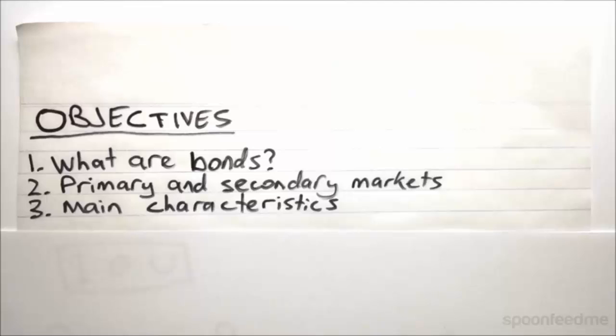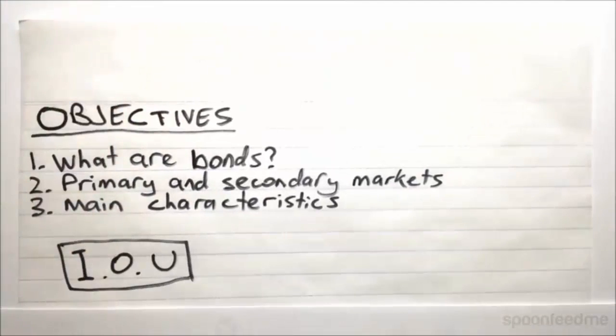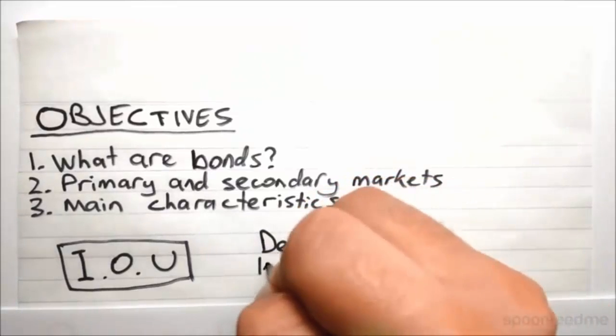So what is a bond? Basically you can think of a bond as being sort of like an IOU. More formally it's what we would call a debt instrument.